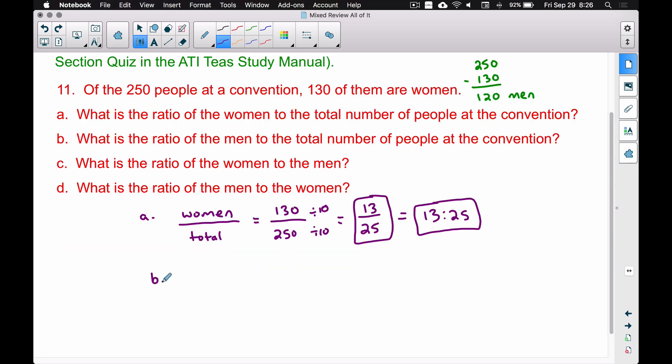Question b: Find the ratio of men to the total. The point I want to make here is that you read these very carefully. The men is 120, the total is 250, and dividing these by 10 we get 12 to 25. Again, you can write that with a colon as well.